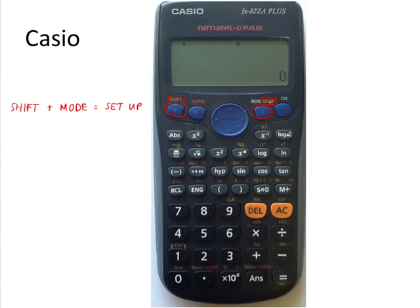Shift Mode gets you into Setup. Then you will see a list of options, and the seventh option is SCI, Scientific Notation. So you choose 7.